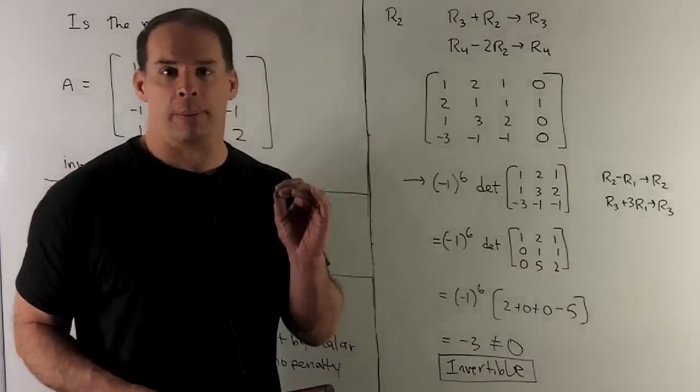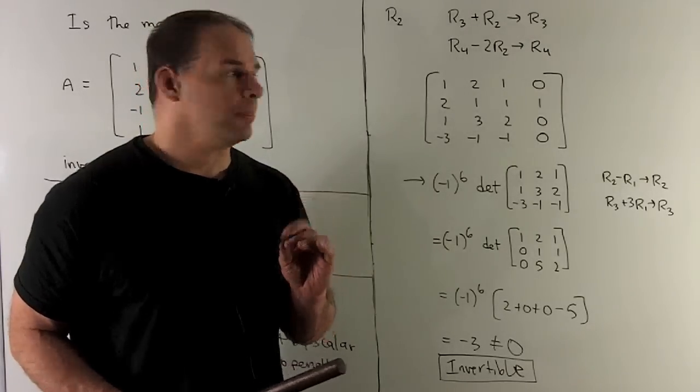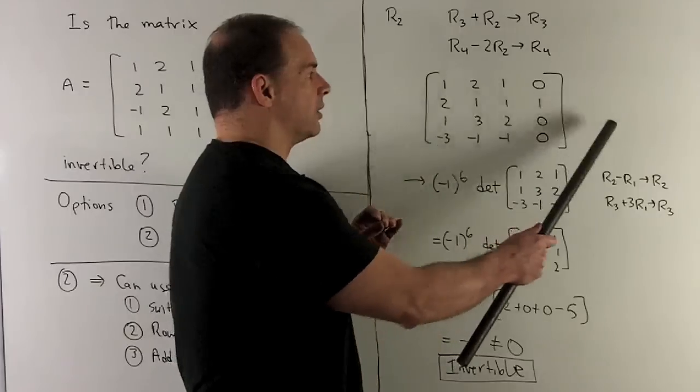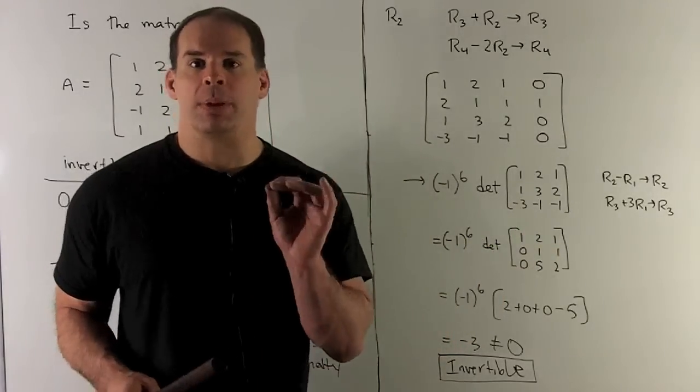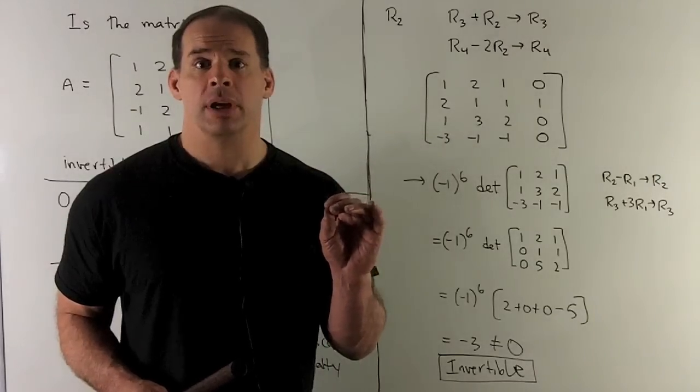Now, I can do a determinant. So we're going to expand down column 4. What's the rule? You take your entry, write your entry down somewhere on the side. You're going to multiply it by minus 1 to the row plus column number. In this case, we're only going to have one term that comes out.